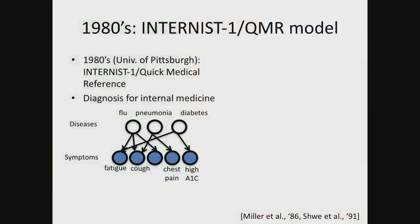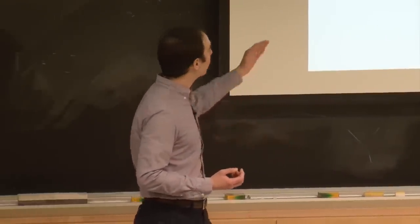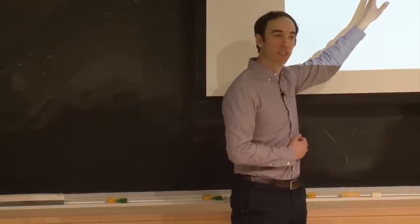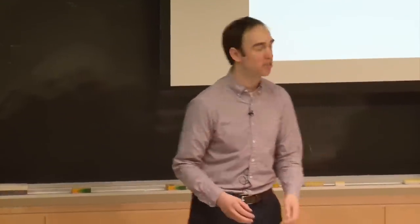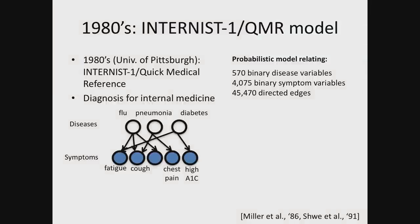There were latent or hidden variables corresponding to different diseases a patient might have — like flu, pneumonia, or diabetes — and variables at the bottom corresponding to symptoms, which are either present or not. Symptoms could include things like fatigue or cough, or lab test results like a high value of hemoglobin A1c. The algorithm would take the symptoms reported for the patient and try to reason about what the differential diagnosis is. There were over 40,000 edges connecting diseases to symptoms, and this probabilistic knowledge base took over 15 person-years to elicit from a large medical team.